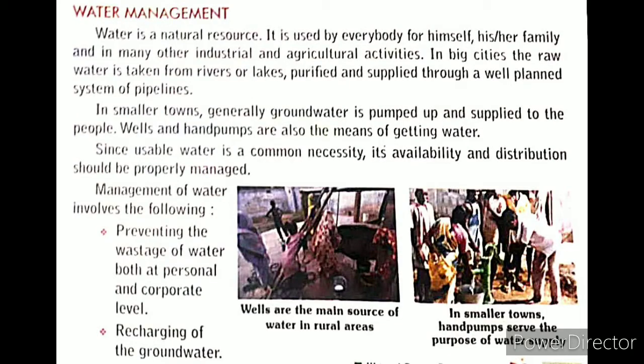The next topic is water management. In big cities, raw water is taken from rivers or lakes, then purified and supplied through a well-planned system of pipelines. In smaller towns, generally groundwater is pumped and supplied to the people. Wells and hand pumps are also means of getting water in smaller towns.